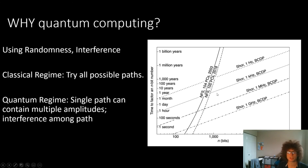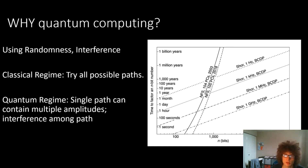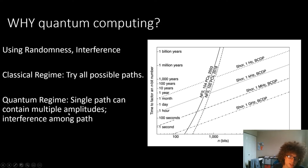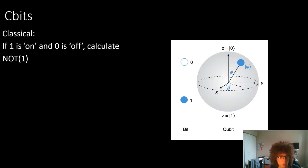The source of this speedup comes from quantum interference. In classical computing, you have to try all possible paths — every path can only contain the output that it produces. But for a quantum system, a single computational path can actually contain multiple different amplitudes and positions of information from its superposition structure, so we can have more than just a zero or one.